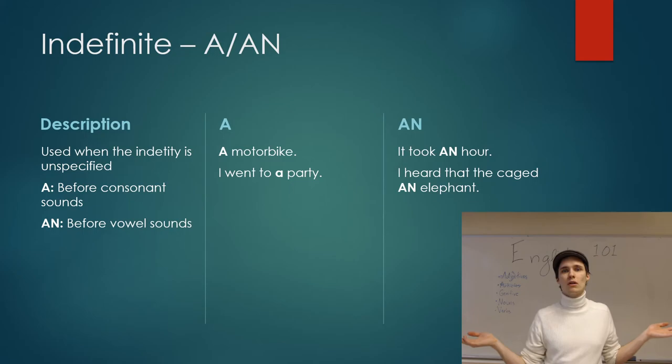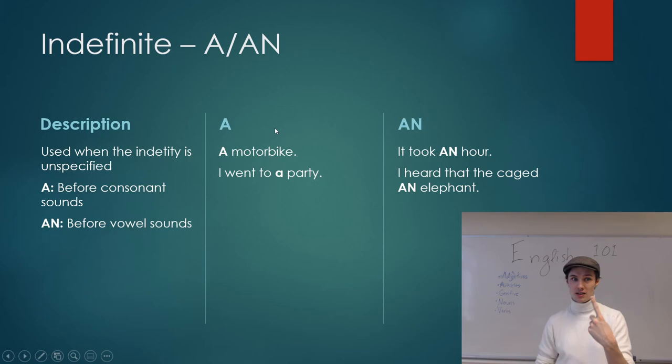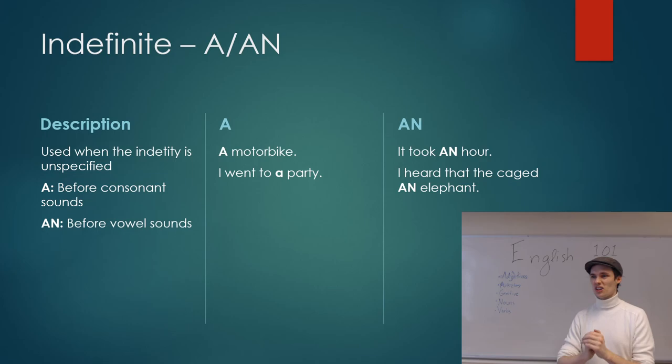And here, 'I heard that they caged an elephant' - it's not a specific one, it's not Dumbo or anything, it's just any elephant. Same thing when we have 'a' - there's a motorbike, not the specific one. I don't know exactly which one it is. Same thing with party as you can see. I went to a party, not any specific party, but it was a party. I don't want to give any more information than that.